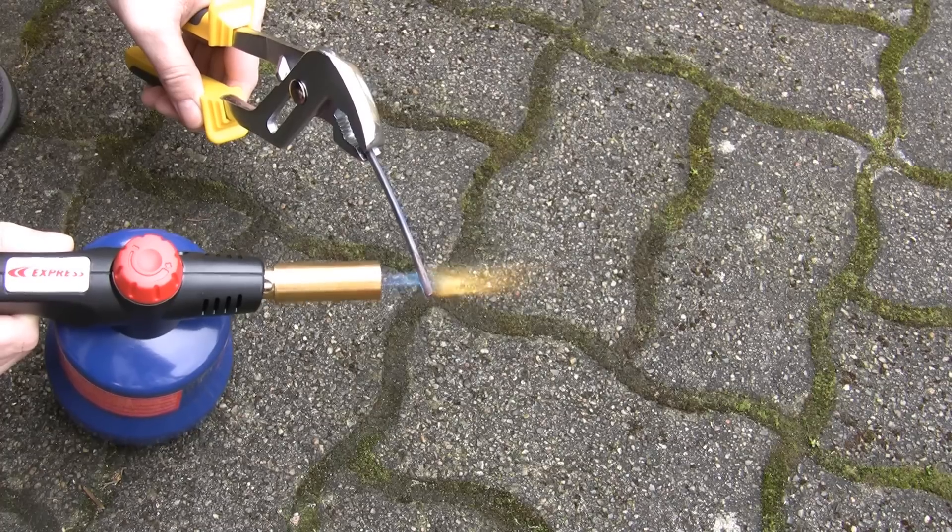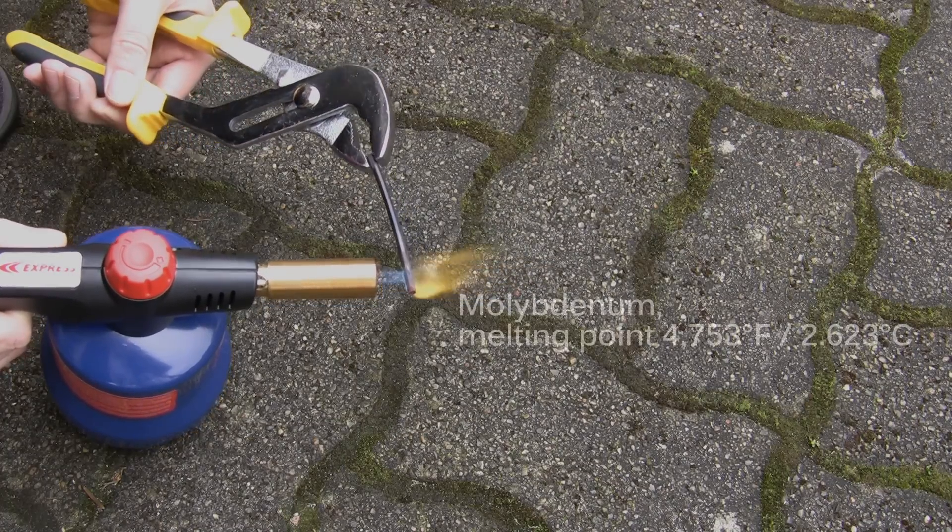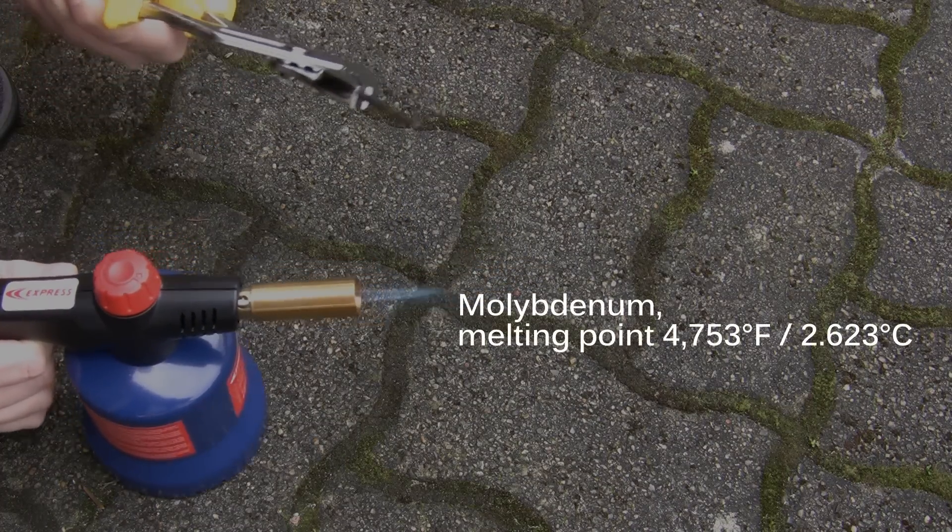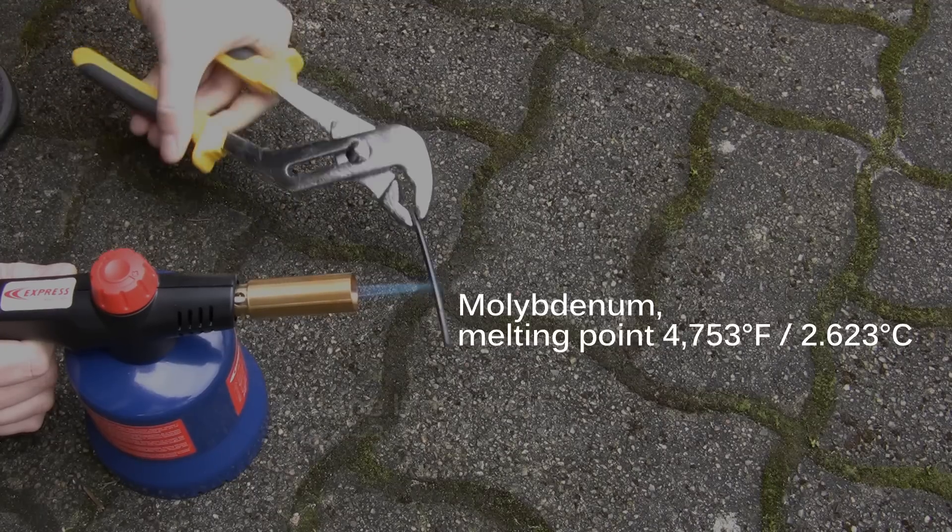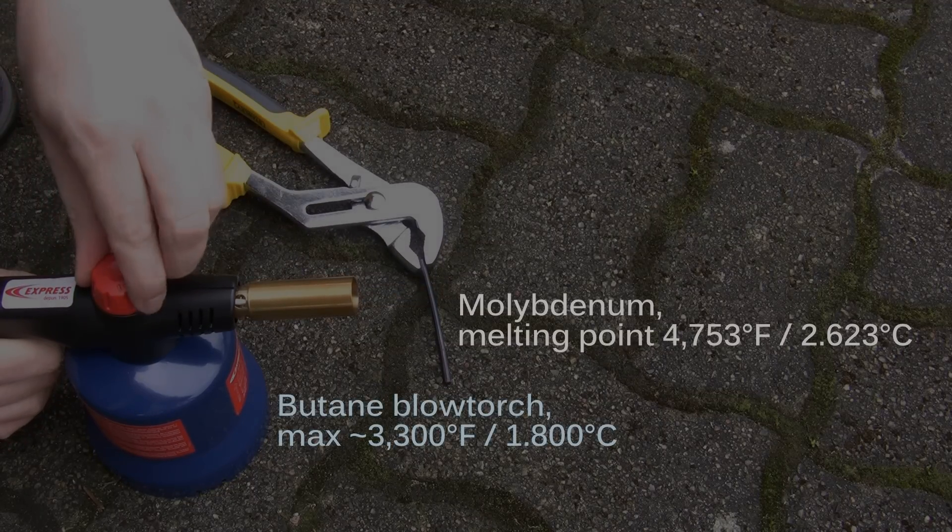That is true for many metals like this stick of molybdenum that will first melt at over 4700 degrees Fahrenheit. But my butane blowtorch maxes out at around 3300 degrees Fahrenheit so I could heat it all day without melting a drop from it.